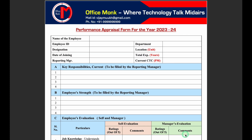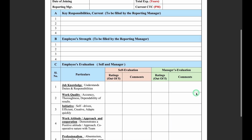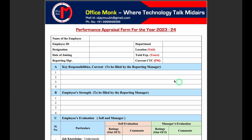This is the performance appraisal form which I have created in advance in MS Word. On the top I have got employee details like name of the employee, employee ID, designation, and so on. Suppose I have a list of 200 employees and at the end of the year I have to generate 200 performance appraisal forms. If I insert things manually in each form it's going to take lots of time, so we are going to generate performance appraisal forms in bulk.